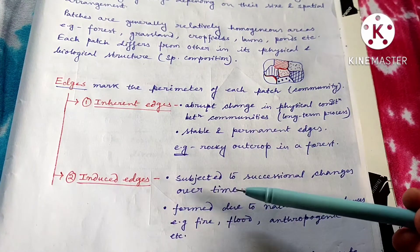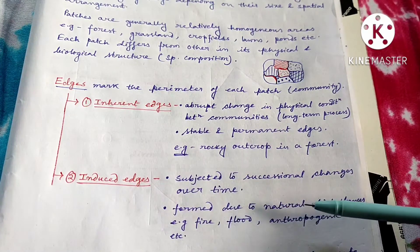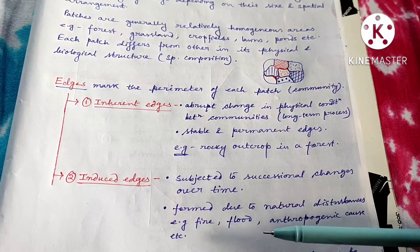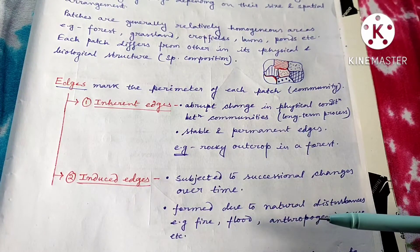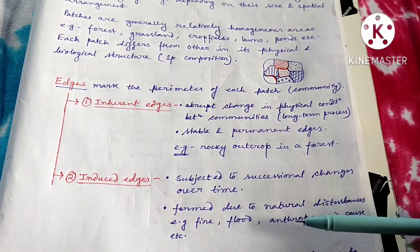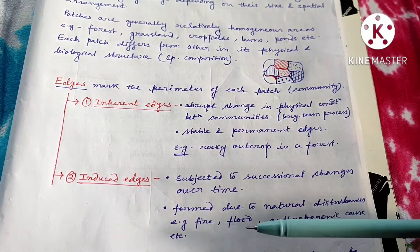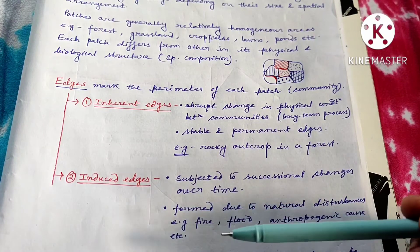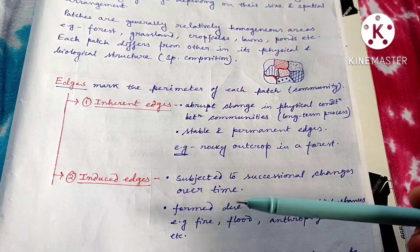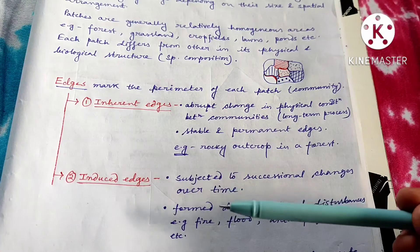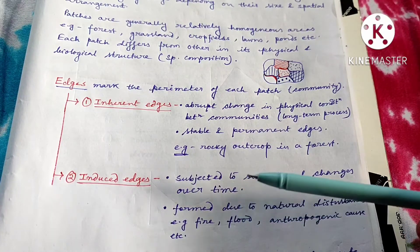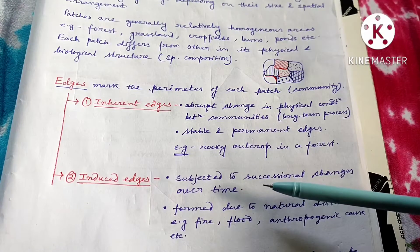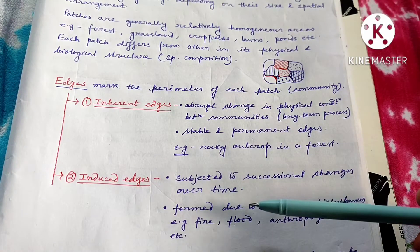An induced edge is formed due to natural disturbances like fire or flood, or anthropogenic reasons like timber harvesting. When an edge forms due to these reasons, it is known as an induced edge — we are inducing the edge to form. It is not inherent, so it is not stable and is subject to successional changes over time.